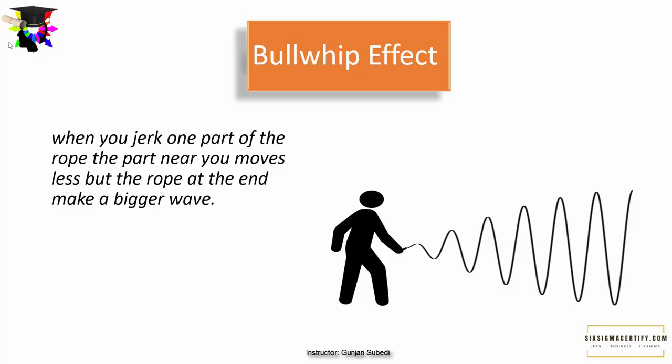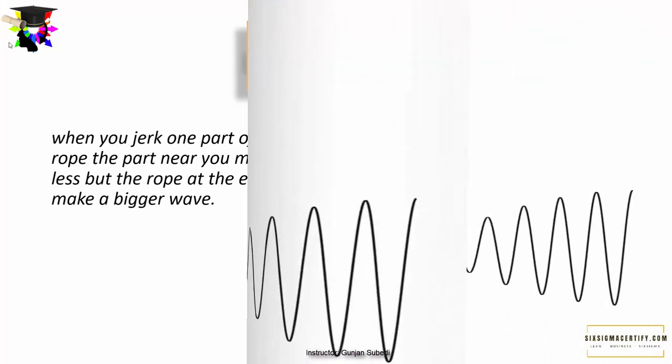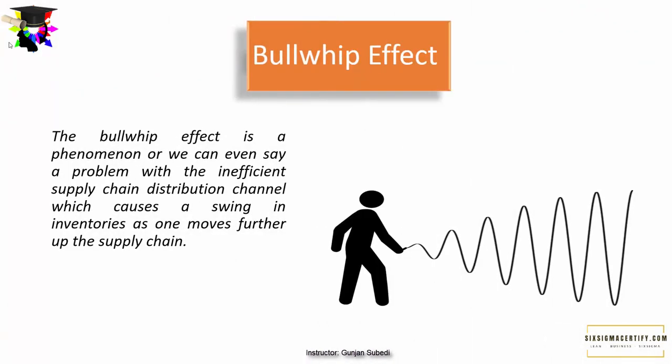What is the bullwhip effect? The bullwhip effect is a phenomenon — or we can say a problem — with an inefficient supply chain distribution channel, which causes a swing in inventories as one moves further up the supply chain.